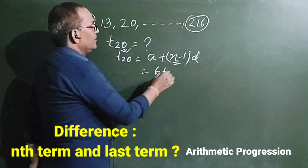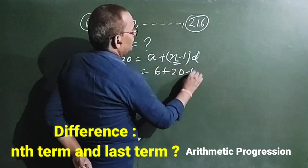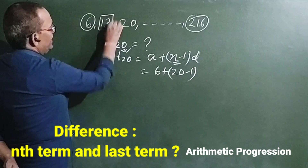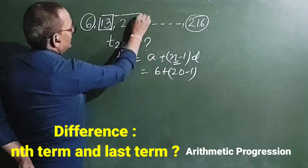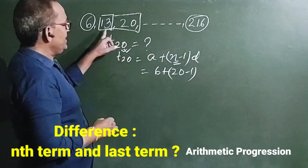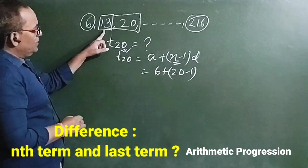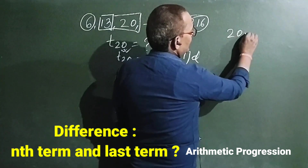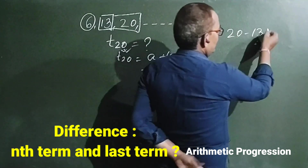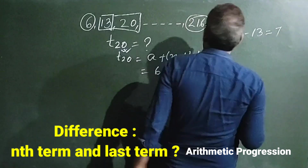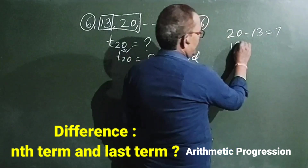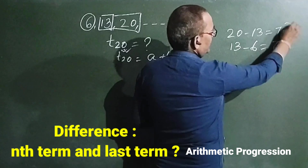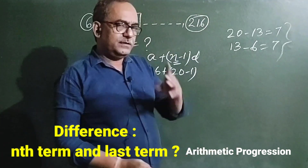So we calculate 20 minus 1, multiplied by D. D is the common difference of any two successive terms — that is, the difference between 20 and 30, or between 30 and 6. The difference between 20 and 30 is 7, so the common difference D is 7.